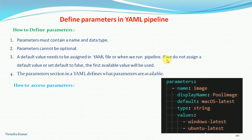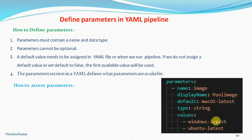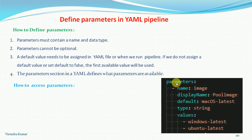If we do not assign a default value, by default it will take 'windows-latest' because that is the first value defined under these parameters — the first available value will be used. The parameter section in the YAML defines what parameters are available. So the required elements are: the 'parameters' keyword, the name of the parameter, a default value, the type of the parameter, and the list of values.